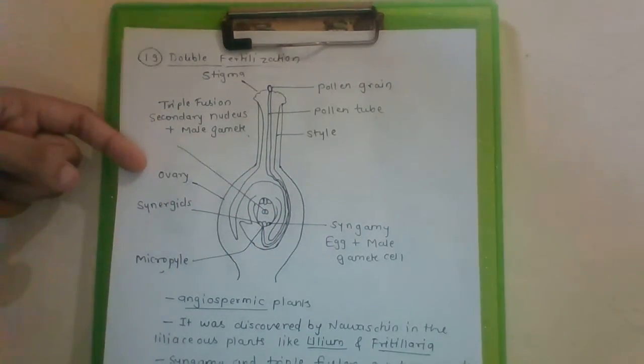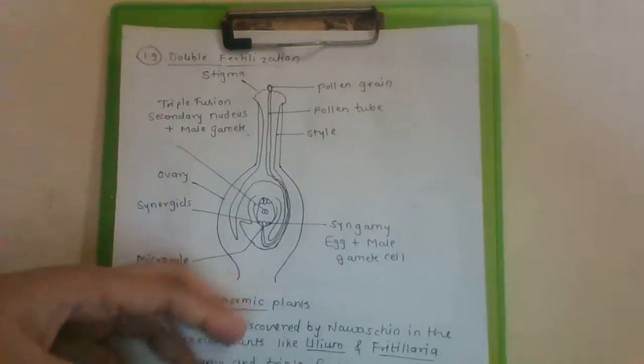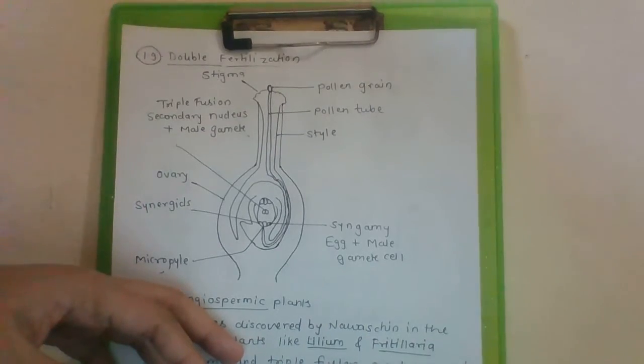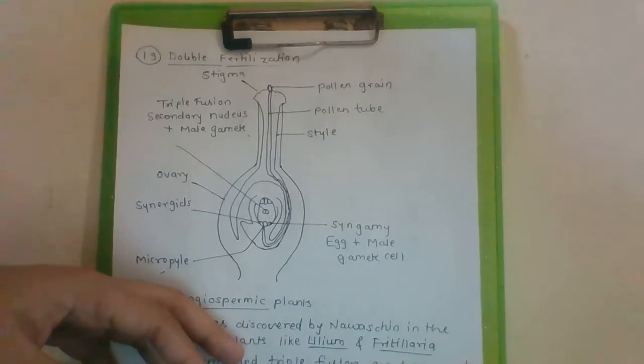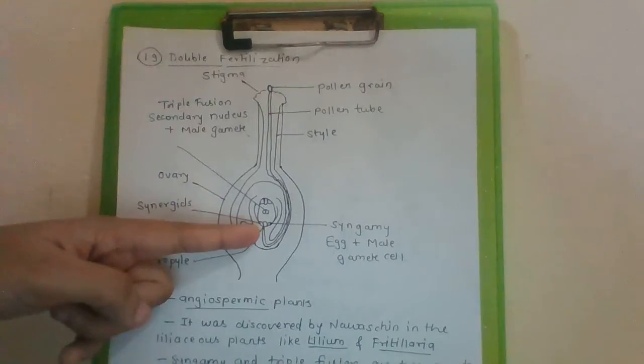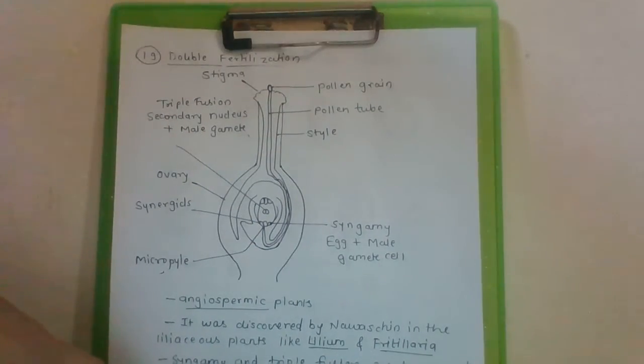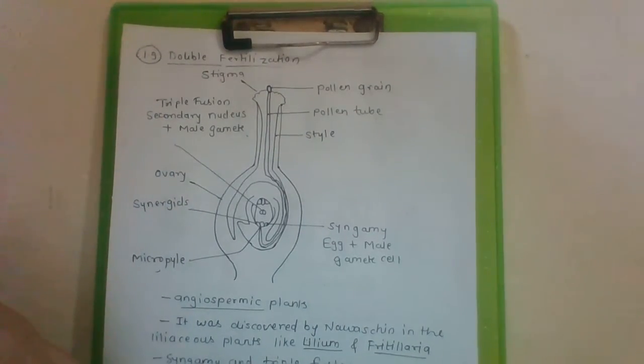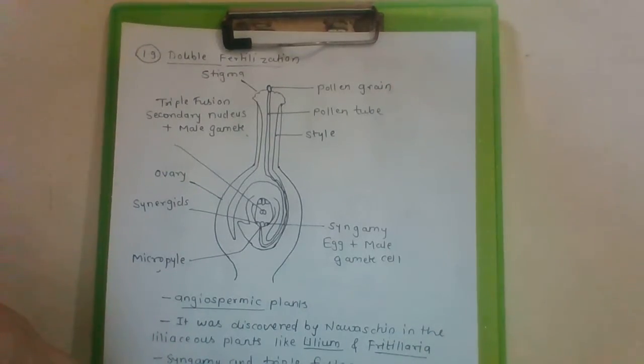Which penetrates the stigma, style, ovary chamber and then enters ovule. The growth of pollen tube is guided by chemicals. Who will provide these chemicals? The chemicals are provided by synergids. The growth of pollen tube is guided by the chemicals secreted by the synergids.